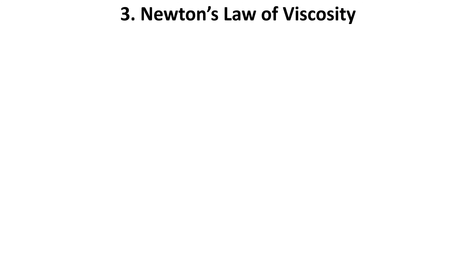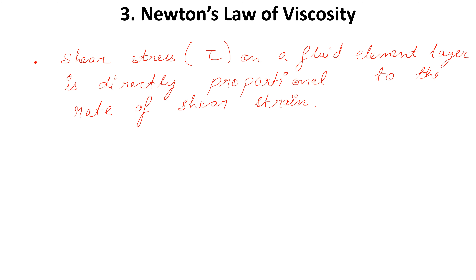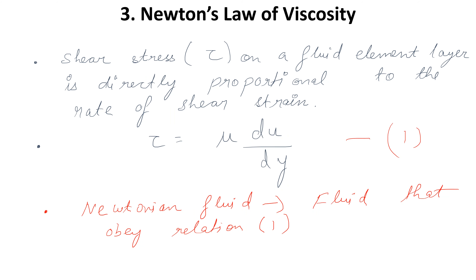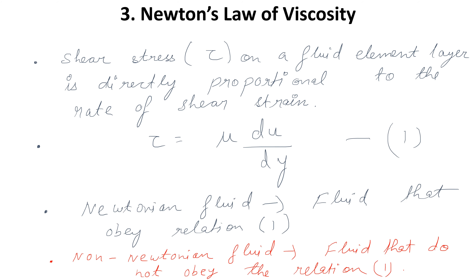Newton's law of viscosity states that shear stress on a fluid element layer is directly proportional to the rate of shear strain: tau equals mu times du by dy. Fluids that obey this relation are known as Newtonian fluids, and fluids that do not obey this relation are known as non-Newtonian fluids.